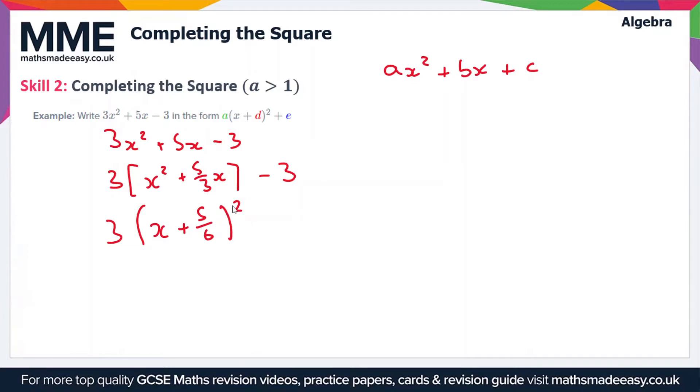Now the reason it's 5 over 6 is because we have to half this coefficient of x here, and when we half 5 over 3 we get 5 over 6. So we're going to end up with 3 lots of x plus 5 over 6 squared plus e.